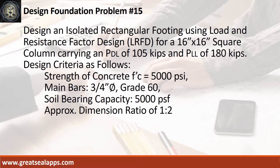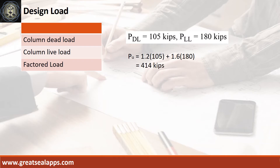Design an isolated rectangular footing using load and resistance factor design for a 16 inches by 16 inches square column carrying an actual dead load of 105 kips and actual live load of 180 kips. Design criteria: concrete strength 5000 PSI, main bars 3/4 inch diameter grade 60, soil bearing capacity 5000 PSF, approximate dimension ratio of 1 to 2. The factored load is 414 kips.